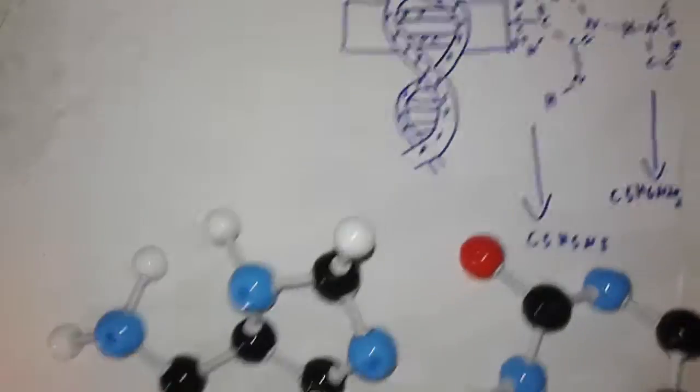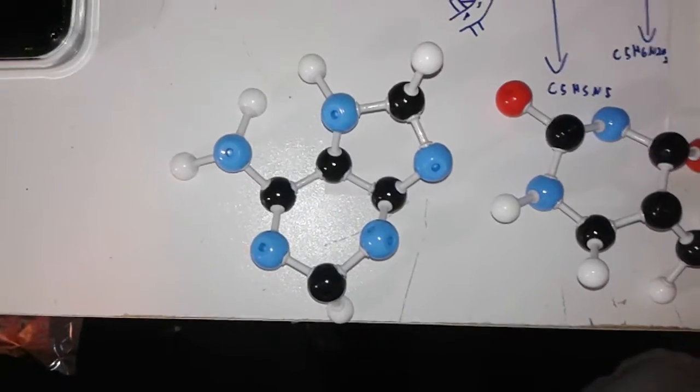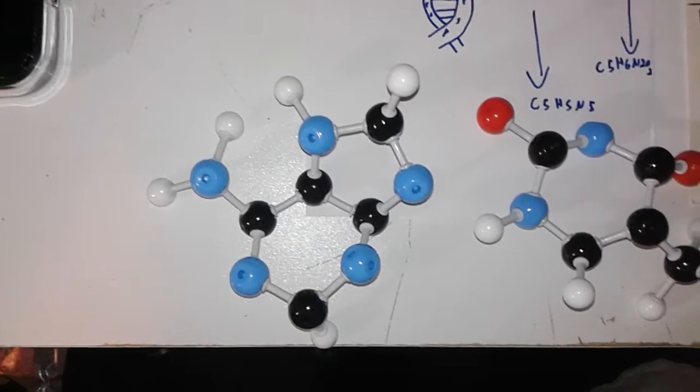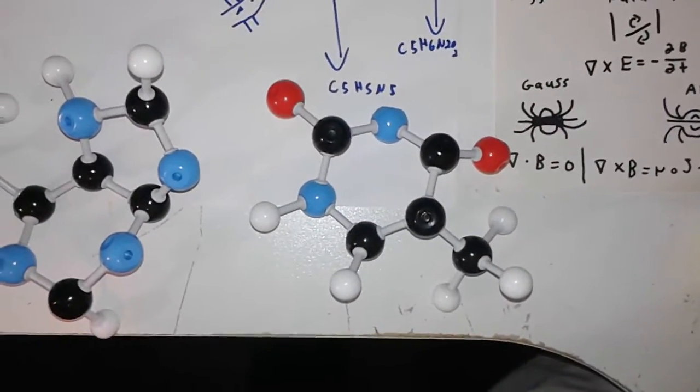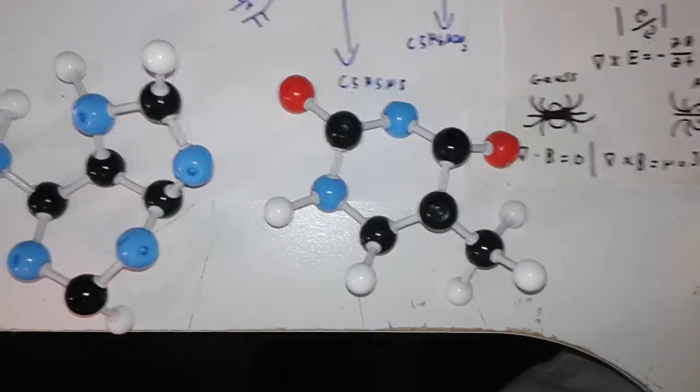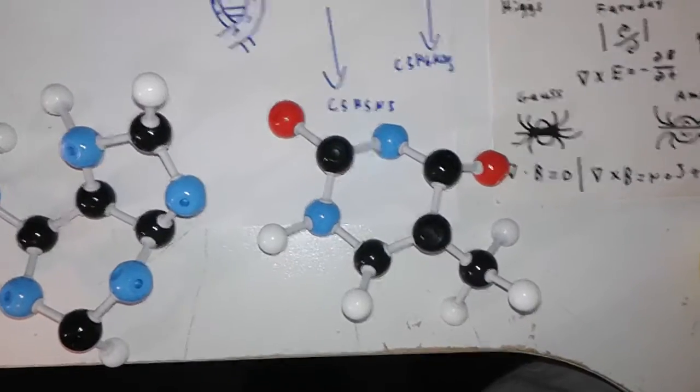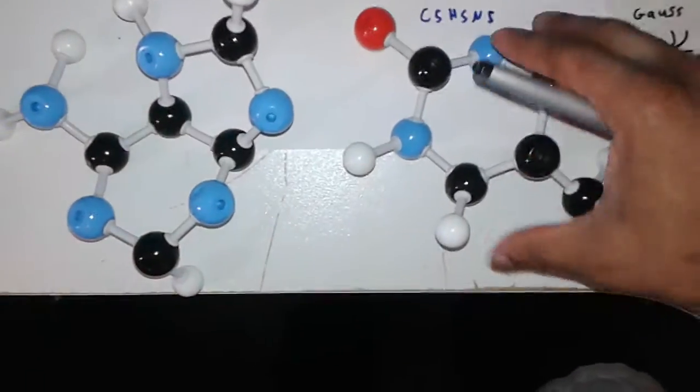As you can see adenine's molecular structure is C5H5N5. The nitrogen atoms are blue, the hydrogen atoms are white, and the carbon atoms are black. The thymine's molecular structure is C5H6N2O2. And as you can see the nitrogen atoms are blue, the carbon atoms are black, the oxygen atoms are red, and the hydrogen atom is white.